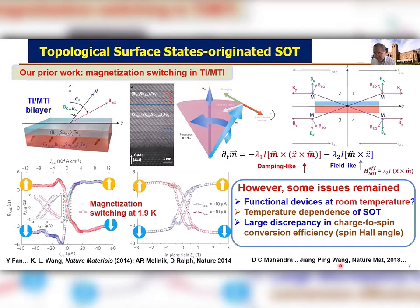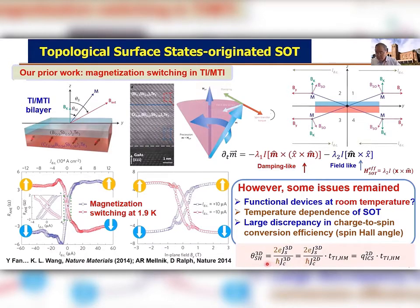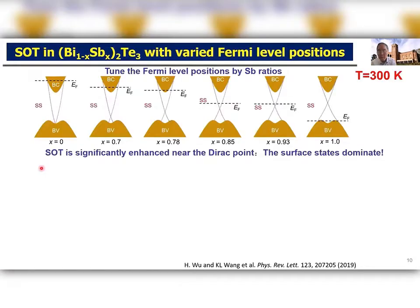A few years later, the Jing Shi group at UC Riverside also used sputtered films instead of MBE films and showed they could also achieve spin-orbit torque efficiency, although much smaller compared to low temperature. The question arose about evaluating the 3D spin Hall angle, since the topological surface is 2D. After proper assessment, the effective thickness of topological surface states was determined to be about 2 to 3 nanometers.